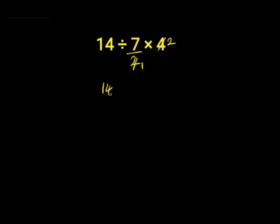Then we have 14 divided by 7 times 2. 14 divided by 7 gives us 2. Then we have 2 times 2. 2 times 2 is 4. 4 is the wrong answer to this question because